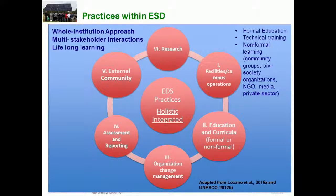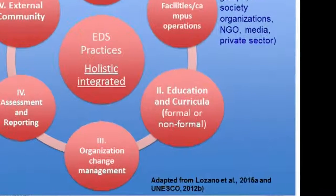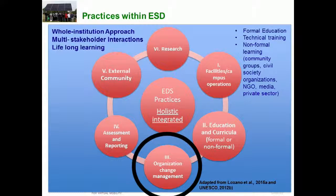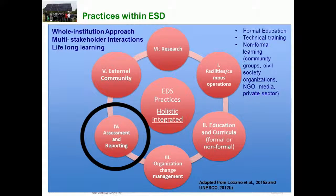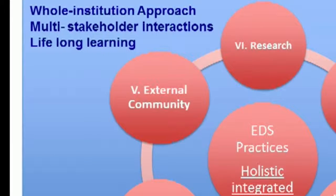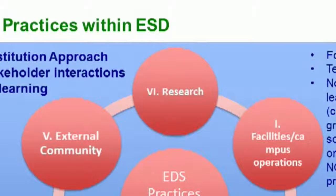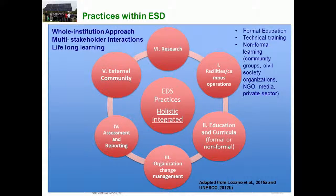Another type is about education and curricula at formal or non-formal levels of education — this is where the main publications and research are focused. A third type is at the organization and change management level. A fourth is assessment and reporting and communication about how an organization is performing their sustainability. A fifth type is about external community. The seventh type is within research. These can all be applied together according to a whole institution approach, or applied separately.